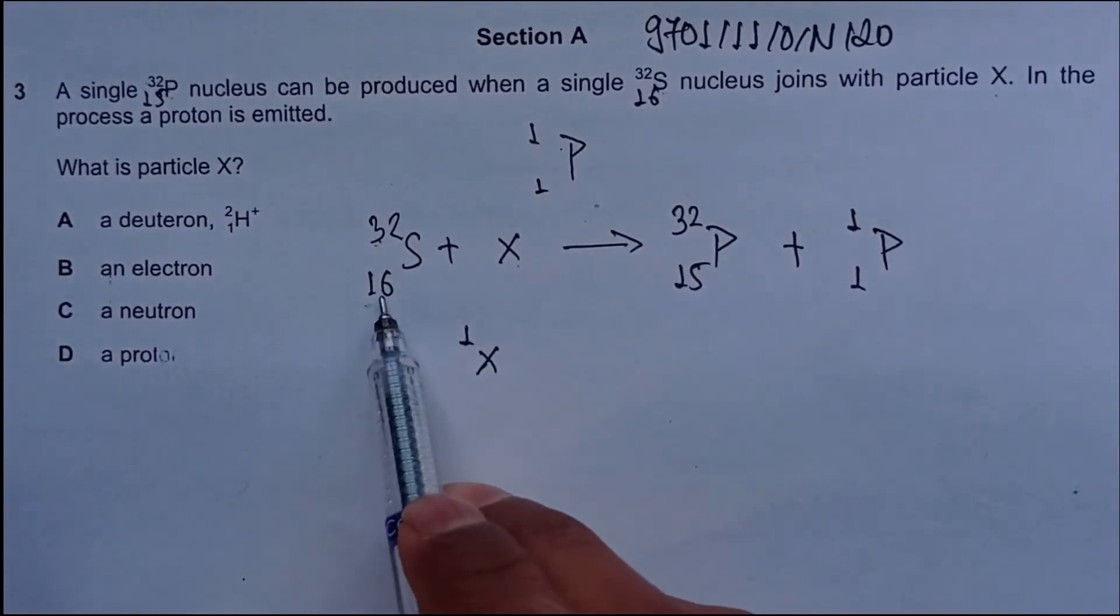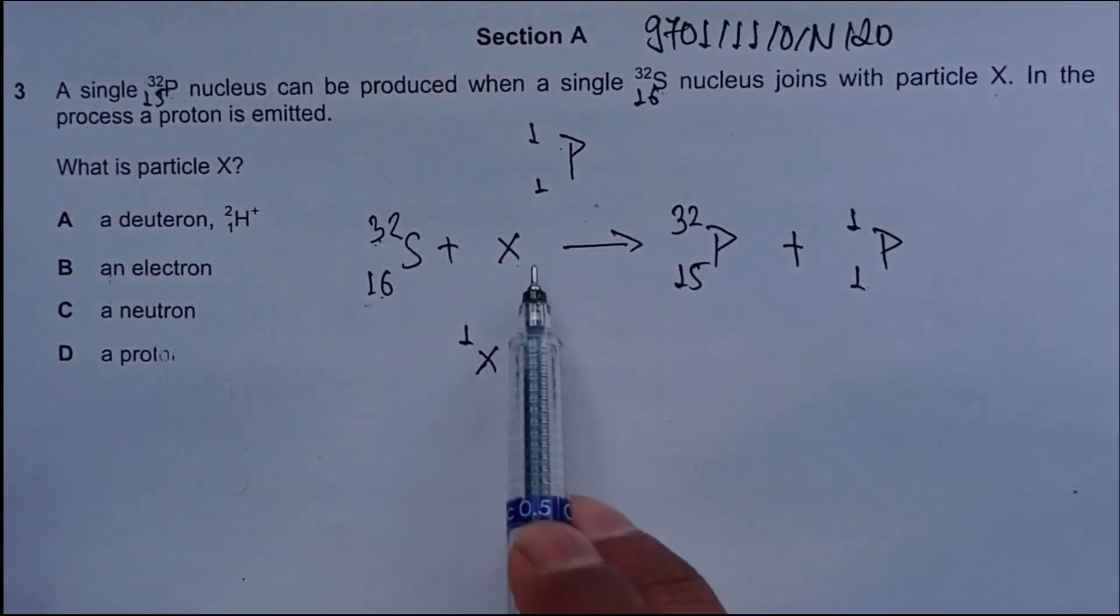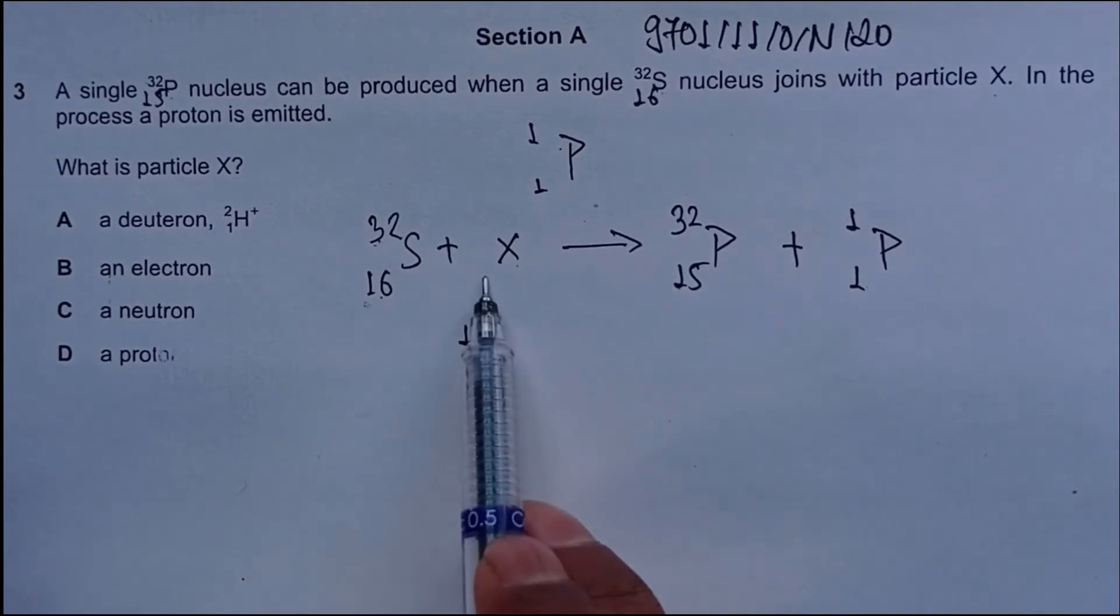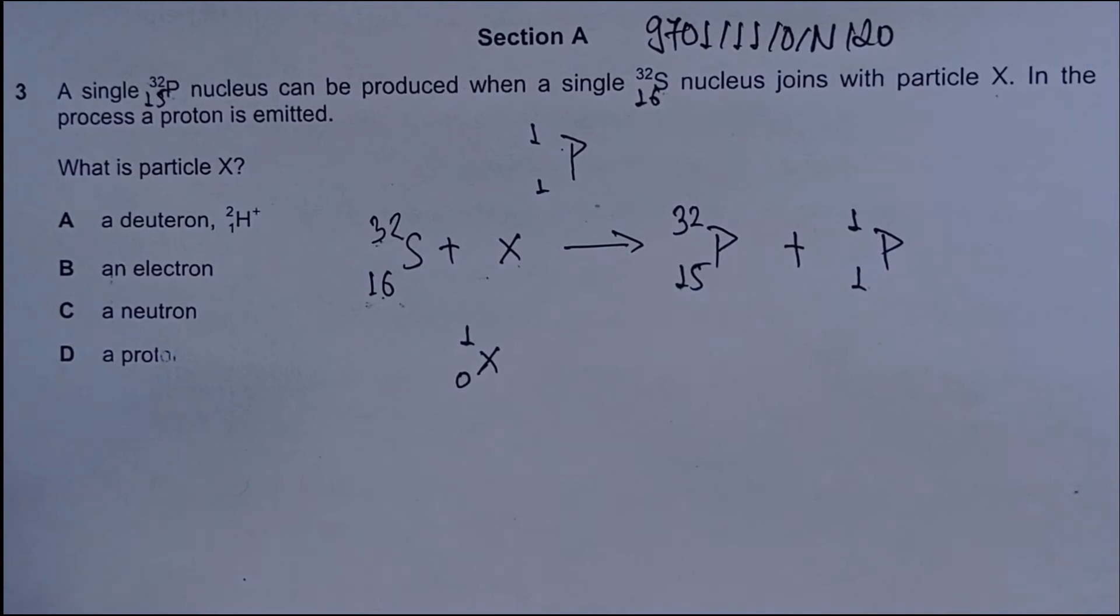The total number of protons are 16 on the reactant side and 15 plus 1 equals 16 on the product side. So X should have 0 protons, because only with 0 protons will it balance. We have a total number of 16 protons on both reactant and product sides.